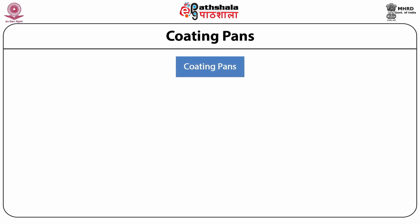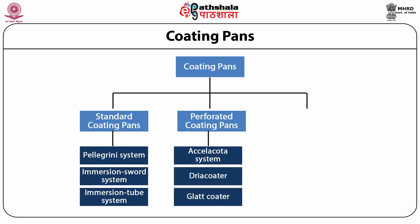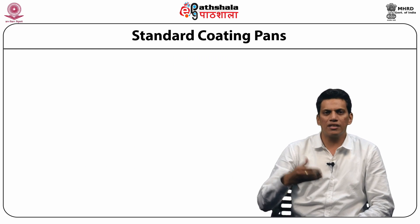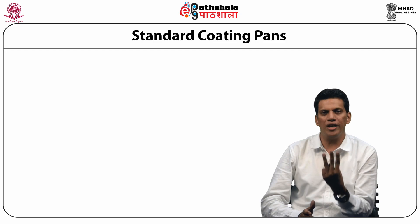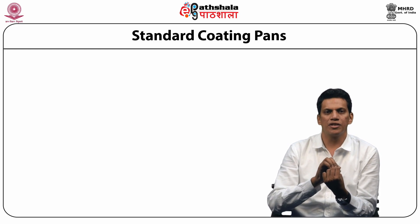Coating pans are available in three basic designs: first, the standard coating pan; second, the perforated coating pan; and third, the fluidized or air suspension coater. The general trend has been towards energy-efficient, automated systems to shorten total coating time and reduce operator participation. Several pharmaceutical companies have developed their own coating equipment or made modifications to standard equipment to accommodate their particular coating process.